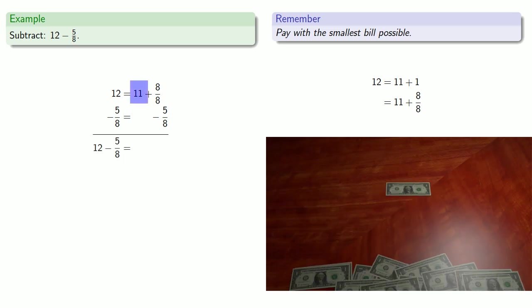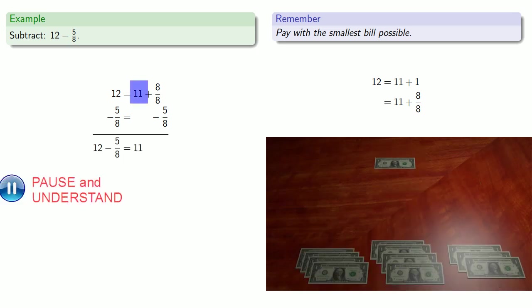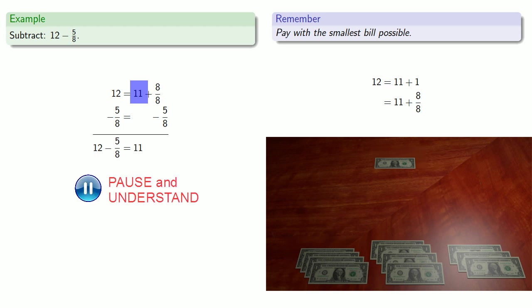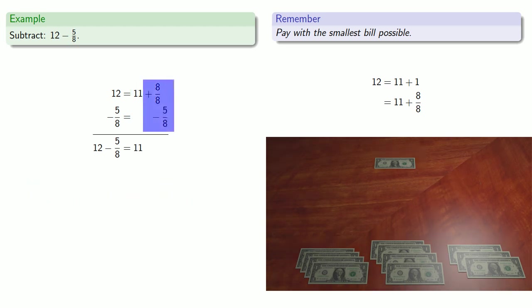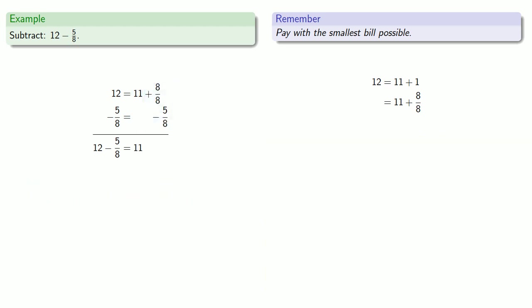Now, this 11 we kept in our wallet and we still have it. The 8/8 we handed over. The cashier took 5/8 of it and returned to us 3/8. And so what we have is 11 plus 3/8, which is the mixed number 11 and 3/8.